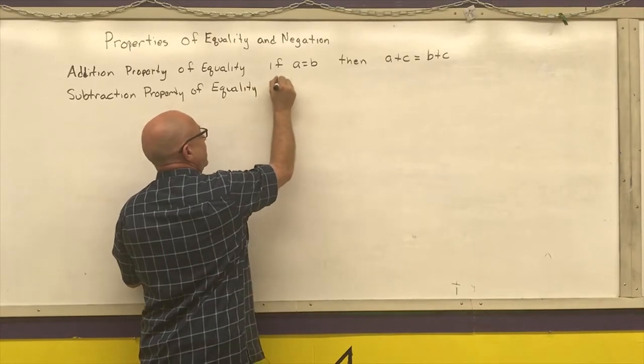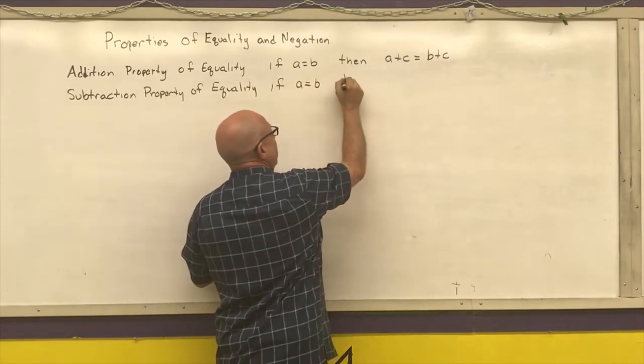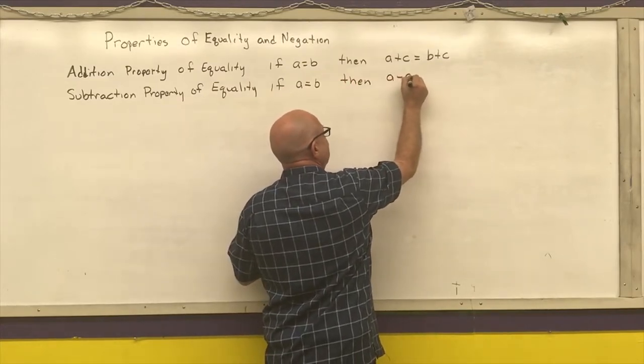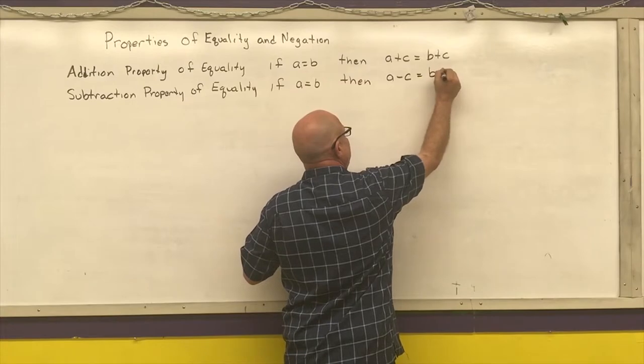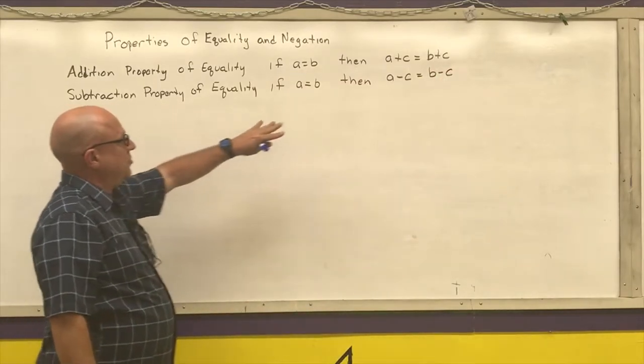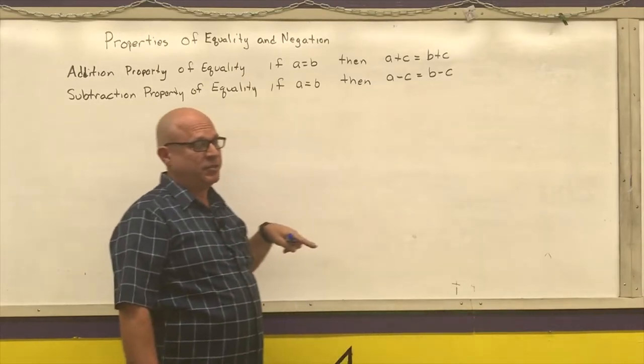So if A is equal to B, then A minus C is equal to B minus C. That says that if I start out with two things that are equal to each other, I can subtract the same thing from both sides of an equation.